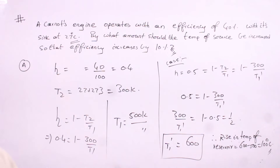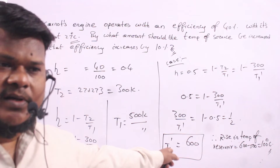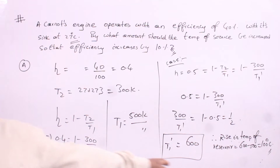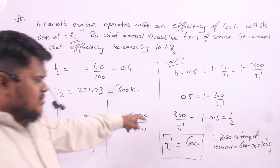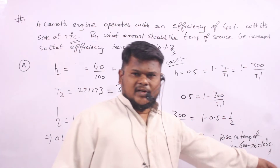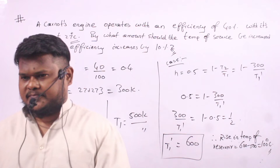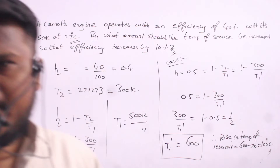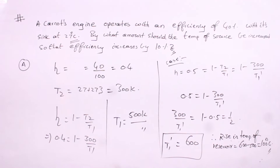100 degree Celsius and 100 degree Kelvin are both the same here, because this is a rise in temperature — the scale difference doesn't matter for temperature differences.